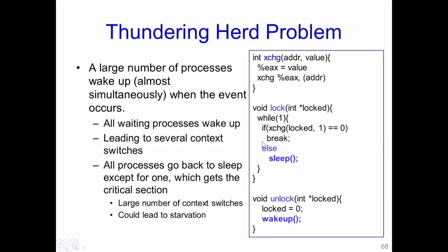One issue with mutexes is what is known as the thundering herd problem. This occurs when we have a large number of processes all using the same critical section and invoking lock to enter it. At the end of the critical section, a process invokes unlock, which wakes up another process waiting. If many processes are sleeping while one executes in the critical section, when that process invokes unlock it invokes wakeup, which results in all sleeping processes being woken up.